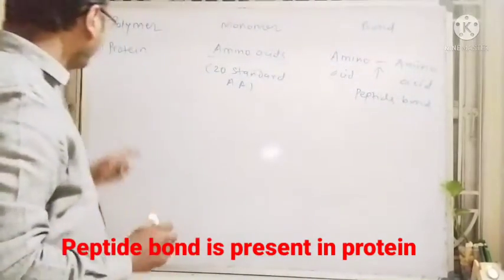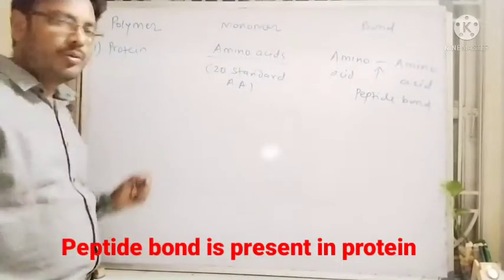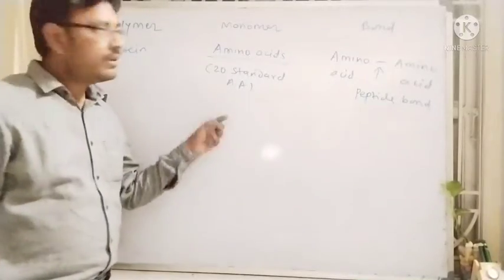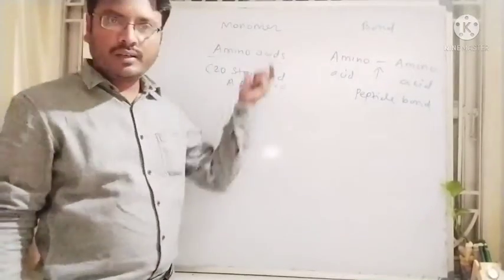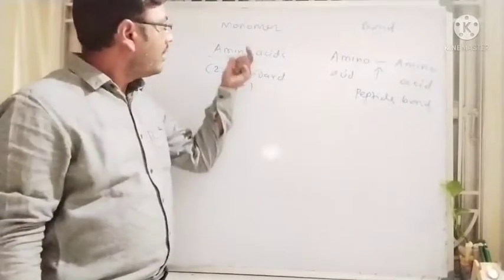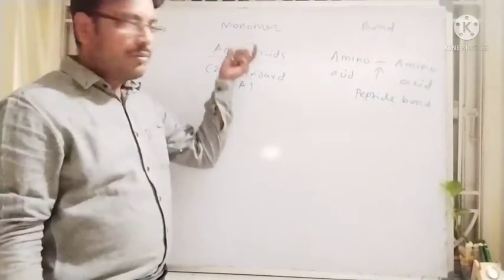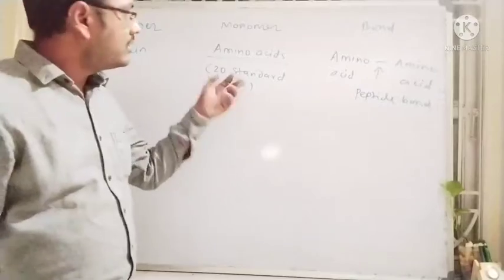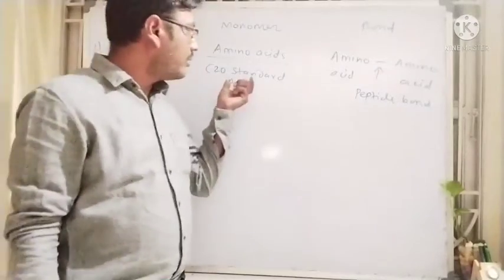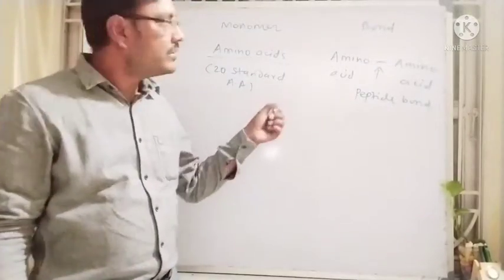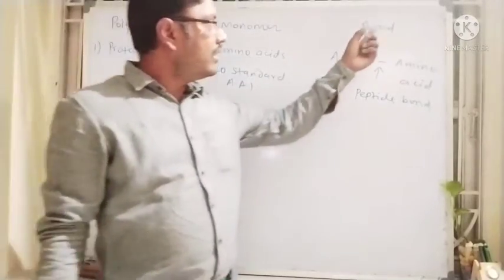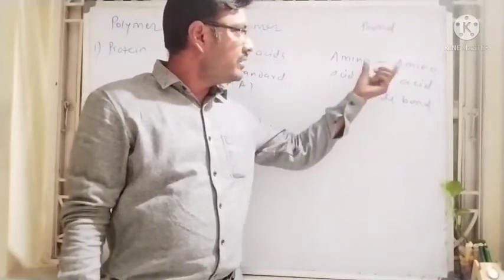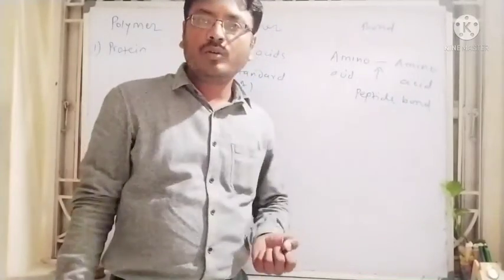So we can say that in proteins, the monomer is amino acids — there are 20 standard amino acids present. And the type of bond present between two amino acids is the peptide bond.